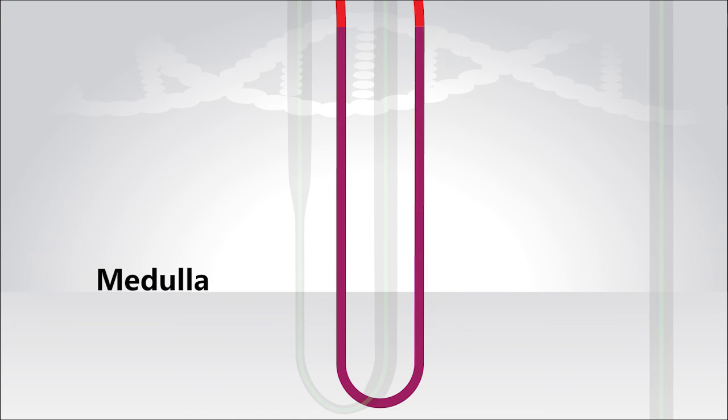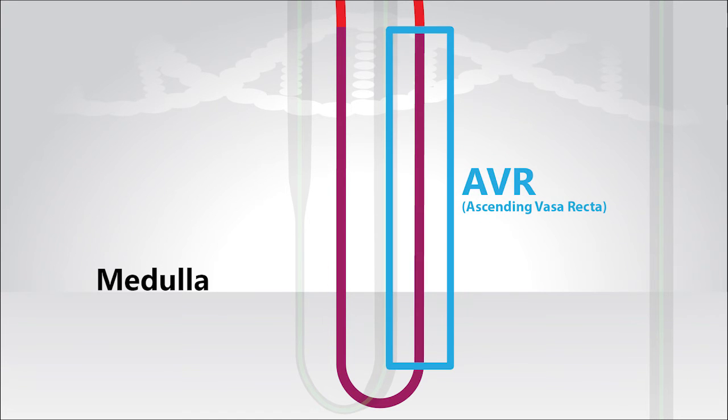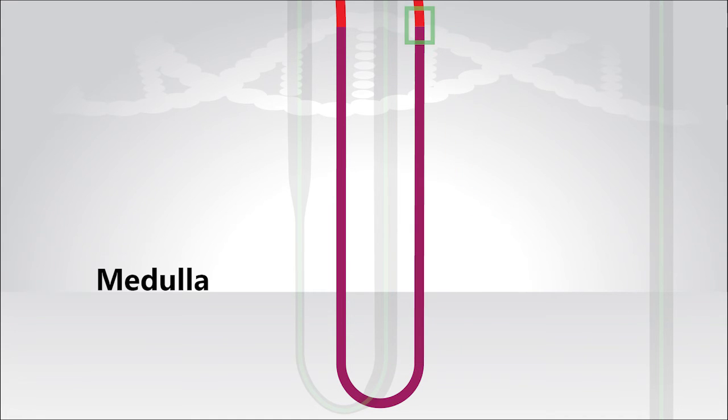This segment is referred to as the ascending vasa recta, and it is abbreviated AVR. Now as the AVR leaves the medulla and enters the cortex, it merges back into the peritubular capillaries.